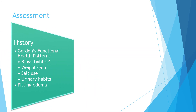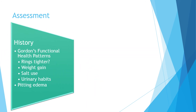During the assessment phase, Gordon's functional health pattern is a great tool for guidance. Questions you may ask include: Does your ring feel tighter? Have you recently gained weight? How much salt do you use? Ask about voiding frequency and amount, and observe for any noted edema.